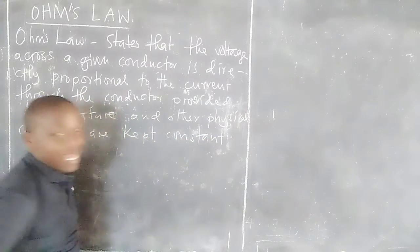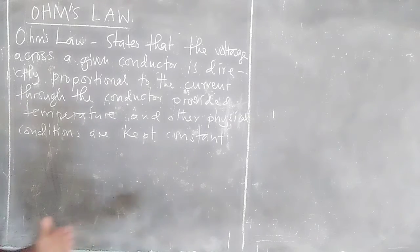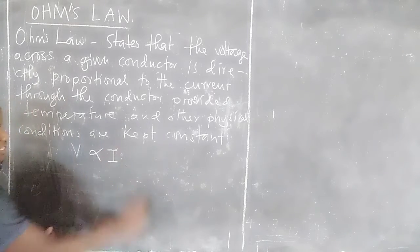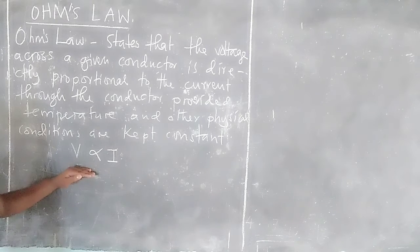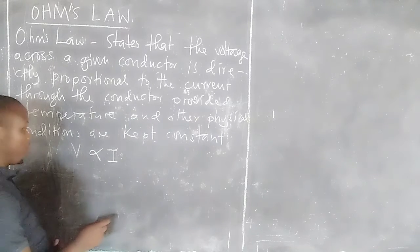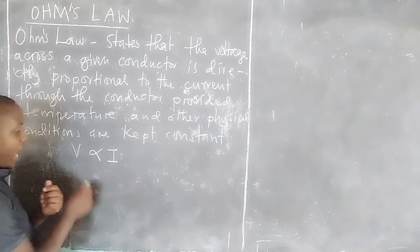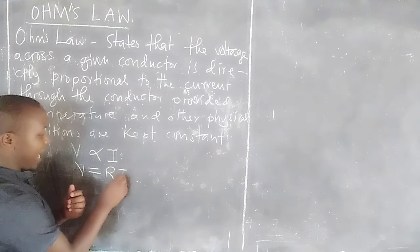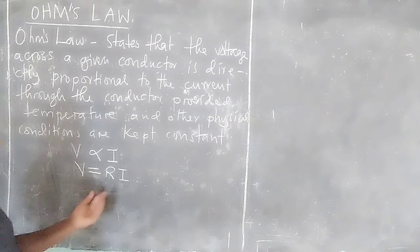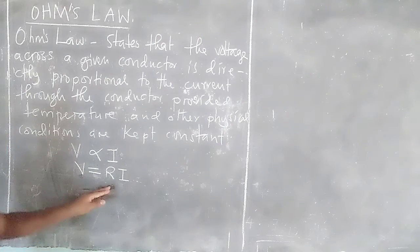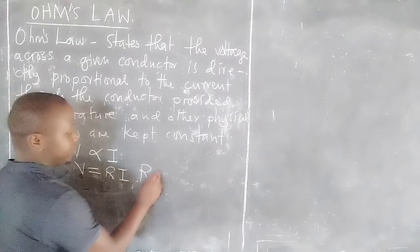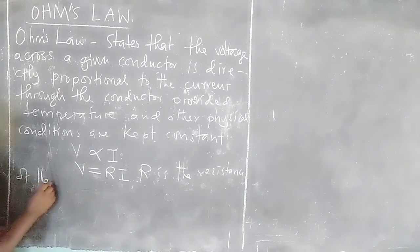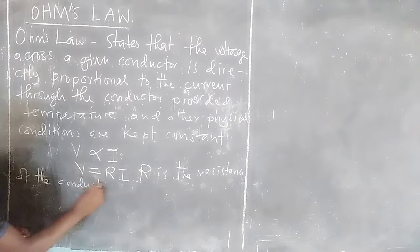Provided temperature and other physical conditions are kept constant. Therefore, mathematically we can say that voltage is directly proportional to current in a given conductor. We can substitute the constant of proportionality with an equal sign and a constant. In Ohm's law, the constant is abbreviated R, so V equals R times I. This constant R is the resistance of the conductor.